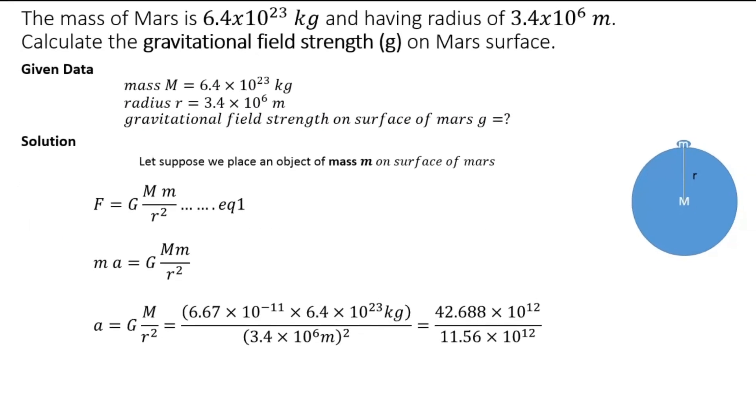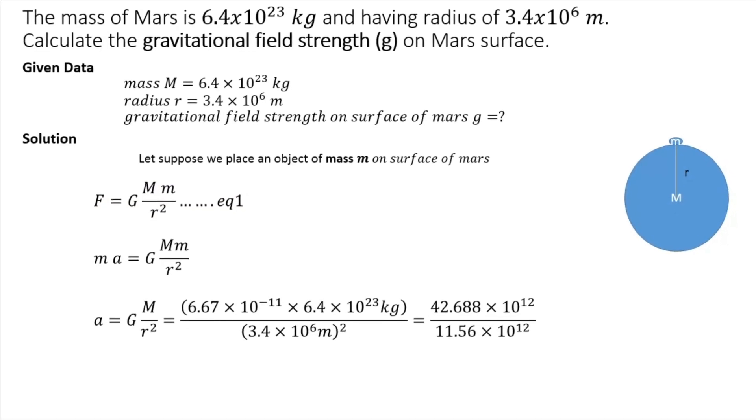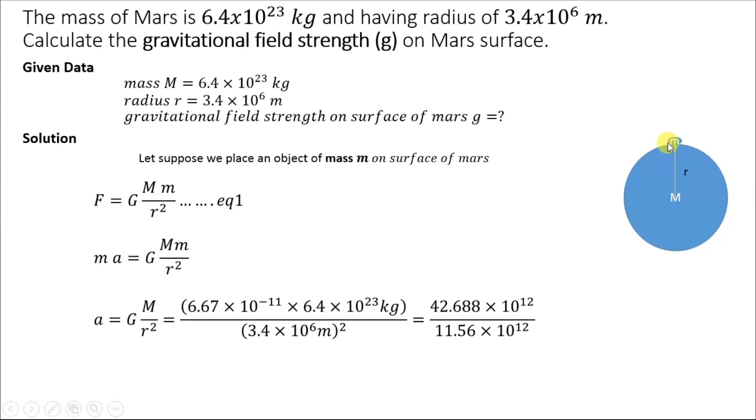law of universal gravitation, which is F = G(m₁m₂)/r². Suppose we place a stone on the surface of Mars. The force of attraction between this stone and the mass of Mars will be equal to G(Mm)/r².